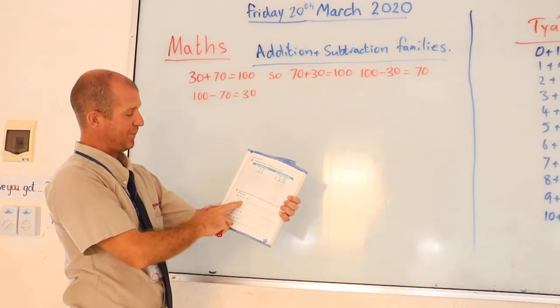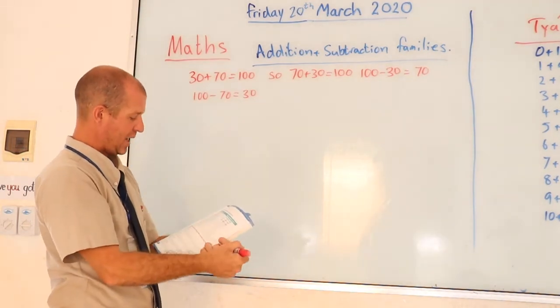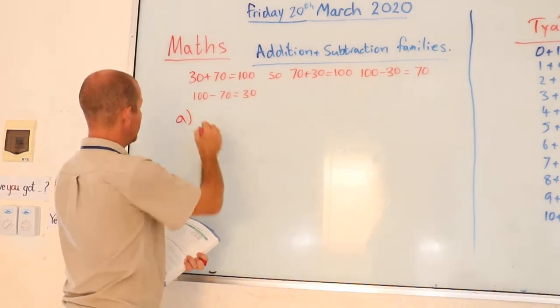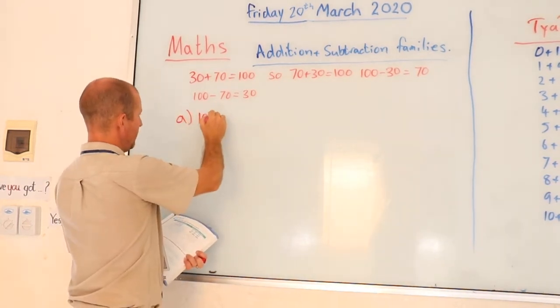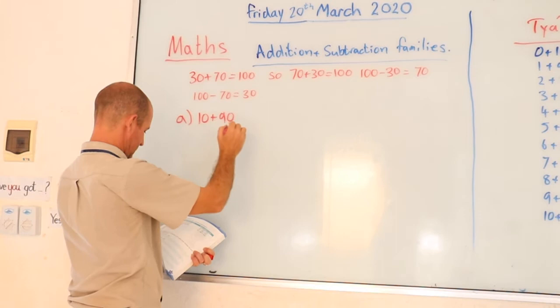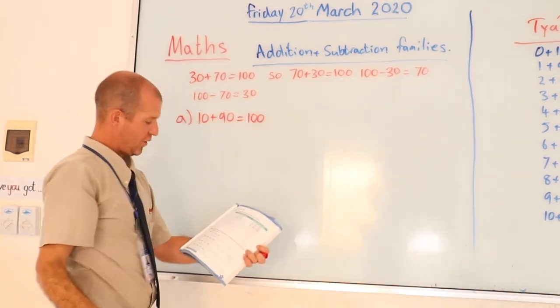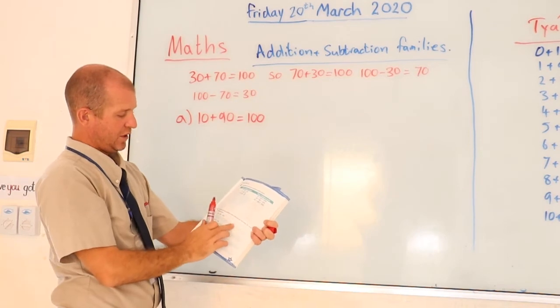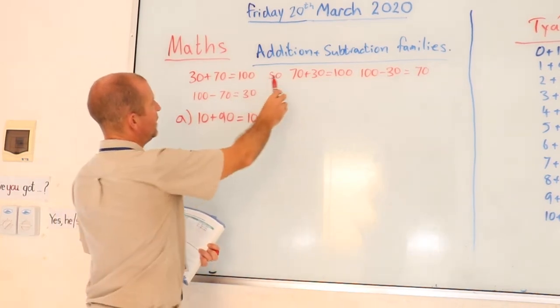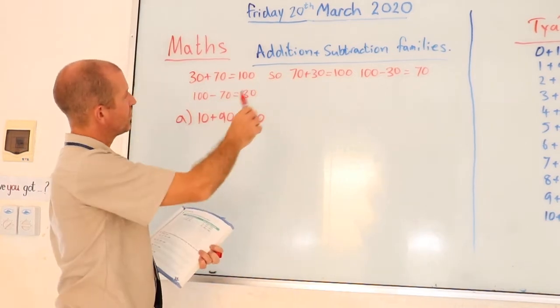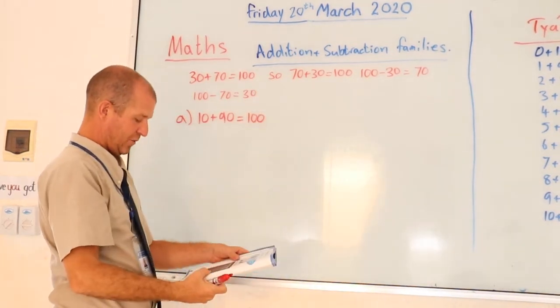So I'd like you to work out for each of these facts, part A, you know that 10 plus 90 is equal to 100. So I'd like you to continue in these four spaces, the families, okay? Just like we did before.